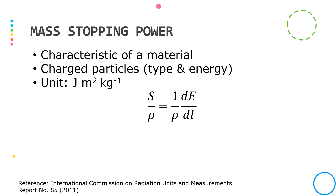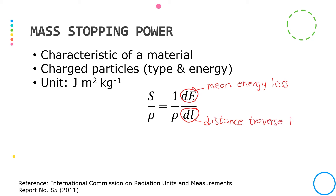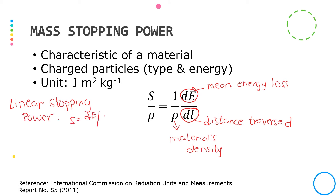The mass stopping power of a material for a charged particle of a given type and energy is given by the quotient of dE divided by ρ·dL, where dE is the mean energy lost by the charged particle in traversing a distance dL of a material with density ρ. We can also define linear stopping power by removing ρ from the expression, so linear stopping power equals dE over dL.